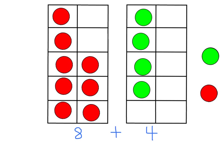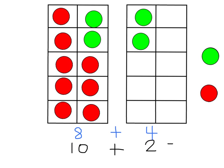Students are again asked to make a friendly 10. Since 8 is closest to 10, I can see by looking at the 10 frame that it only needs 2 more to make 10. So I'm going to move some from the 4 to give to the 8 to make 10 — I need to move 2 over this time. Now I have a full 10 on one 10 frame and 2 on the other. My number sentence now shows 10 plus 2, and 10 plus 2 equals 12.